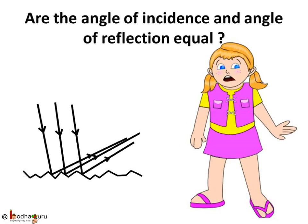Now you might think: are the angle of incidence and angle of reflection equal in the case of diffused or irregular reflection? We can't say that angle of incidence is equal to angle of reflection just from this diagram. But, you know, diffused reflection obeys the law of reflection too.